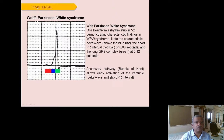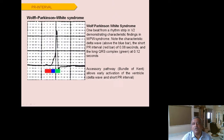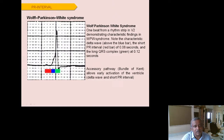Wolff-Parkinson-White (WPW) syndrome involves an accessory pathway — the bundle of Kent — that bypasses the AV delay, directly activating the ventricle early. This produces a short PR interval (less than 0.12 seconds, e.g. 0.08 s) and a delta wave — a slurred upstroke before the QRS — with a wide QRS of 0.12 seconds. This is the characteristic finding of WPW syndrome.